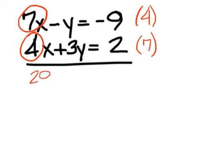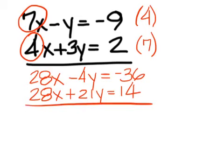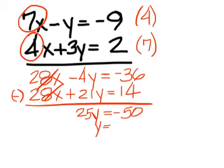On the top, I get 28x minus 4y equals negative 36. On the bottom, it's 28x plus 21y equals 14. The 28s are positive, so I'm going to subtract to get rid of them. Negative 4 minus 21 is 25. And negative 36 minus 14 is negative 50. Negative 50 divided by 25 is negative 2.